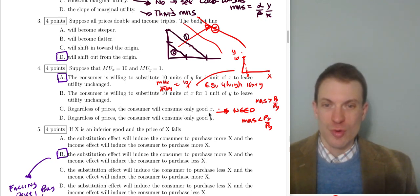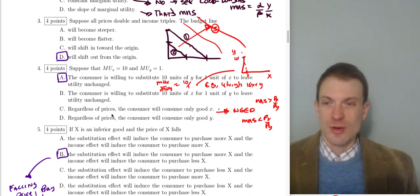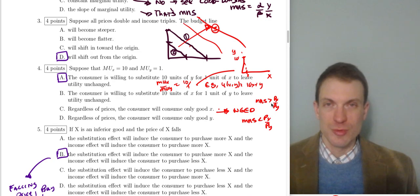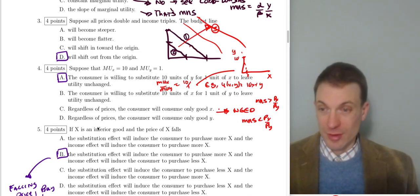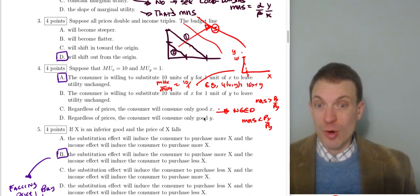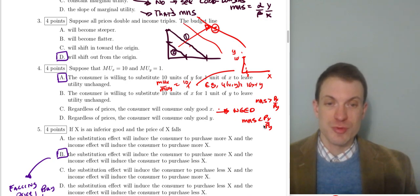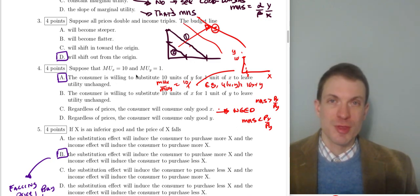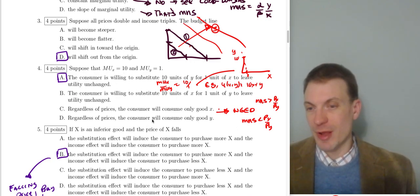Option D says regardless of prices the consumer would choose only x. To be able to say we'd only want x, we'd need a situation where the MRS was steeper than the price ratio. But to know that, we'd need information about prices — and we're simply not given that information.